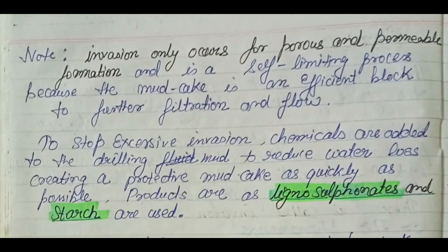When the formation is highly porous and permeable, the depth of invasion will be less. The mud filtrate invades the formation rapidly, and the mud cake builds up very fast, so it does not go deep into the formation. In the case where the formation is porous and permeable, mud cake builds up rapidly and the depth of invasion will be less.